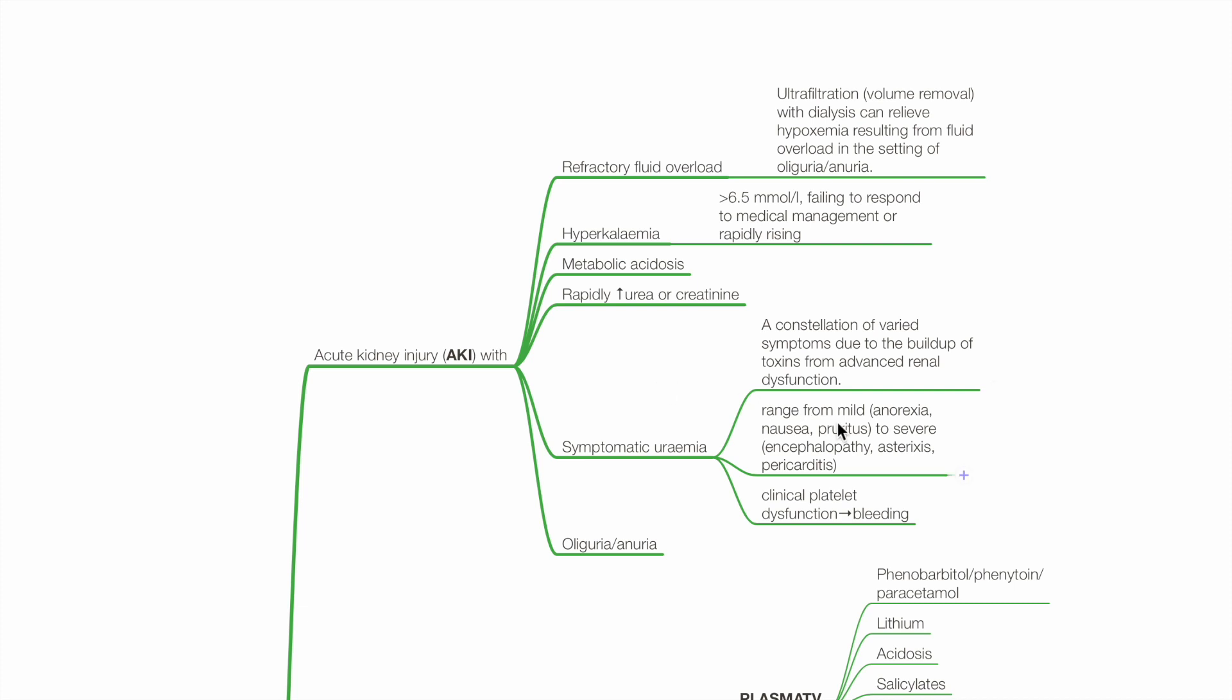Uremia may present with anorexia, nausea, pruritus, encephalopathy, asterixis, pericarditis and bleeding due to platelet dysfunction.